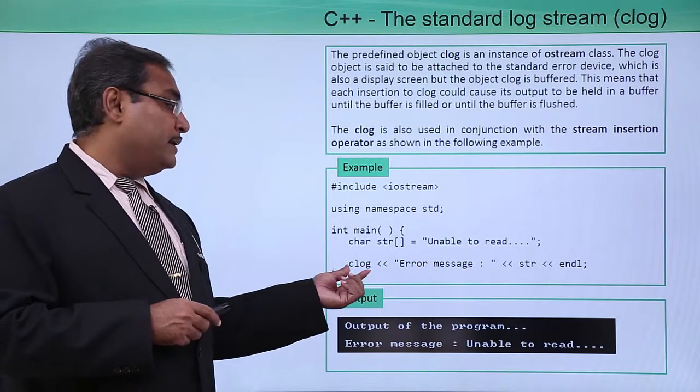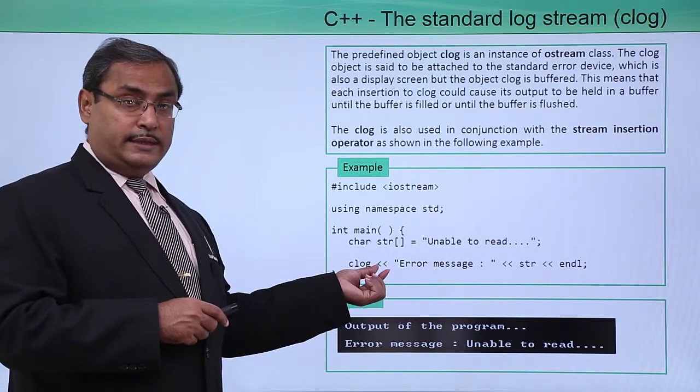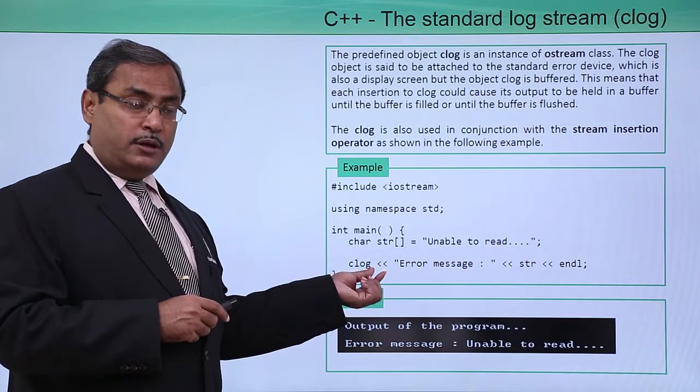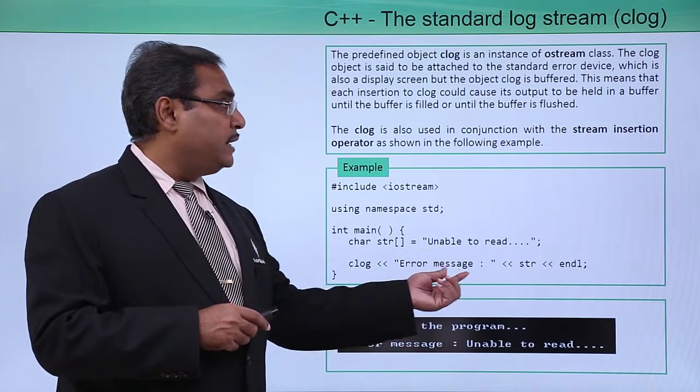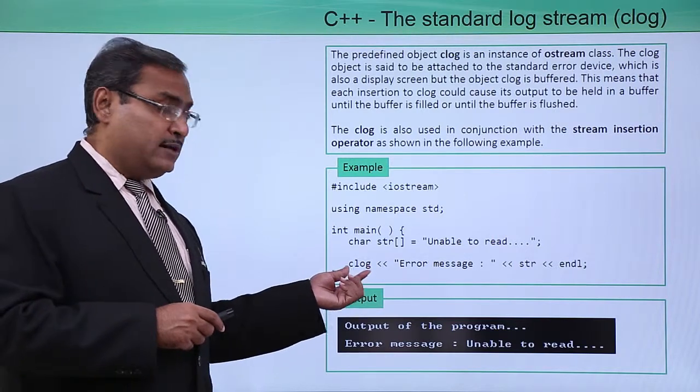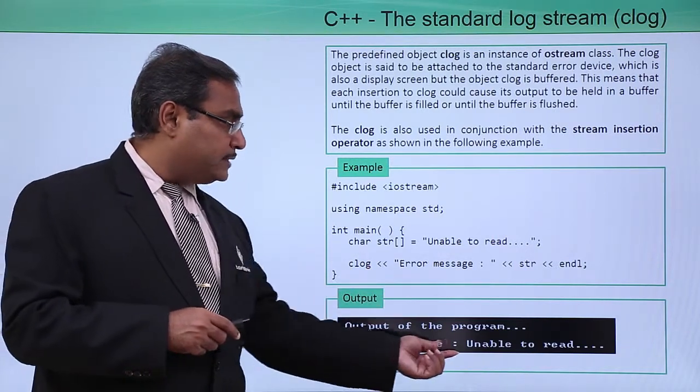We are using clog with the double less than symbol, and then error message. This is the usage of clog, and here we are printing this message onto the output like this.